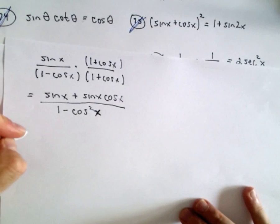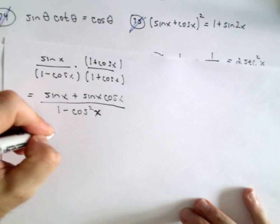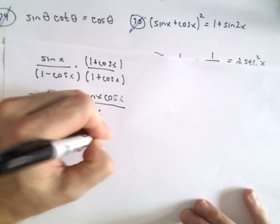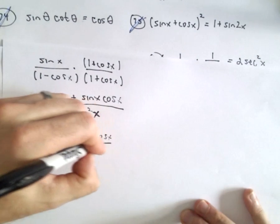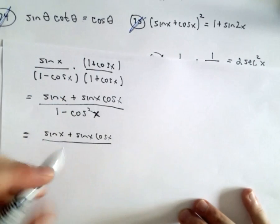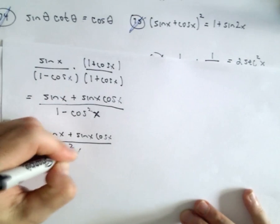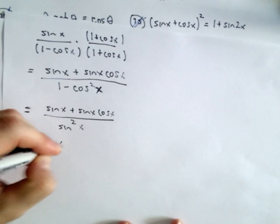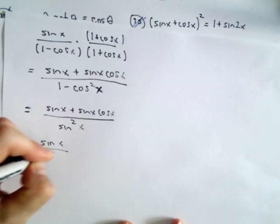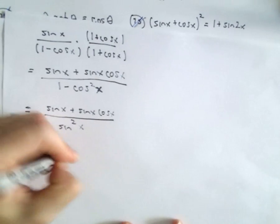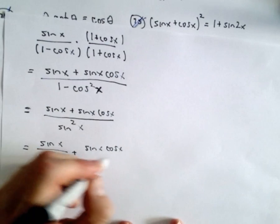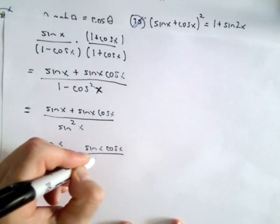Alright, well I'm going to leave the numerator alone. So we just saw in one of the previous examples that 1 - cos²(x) we can write that as sin²(x). Well now we can break this up. We can write this as sin(x)/sin²(x) plus sin(x) times cos(x) all divided by sin²(x).